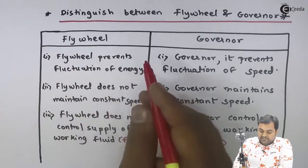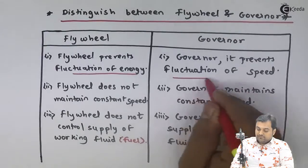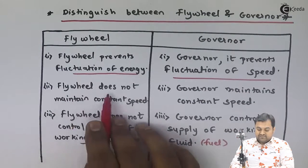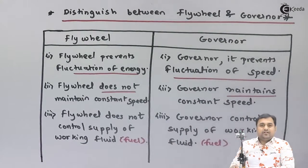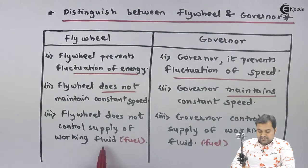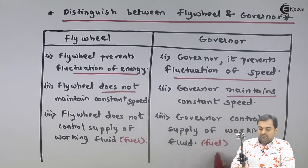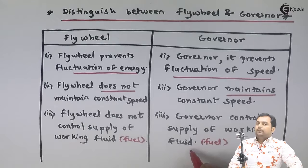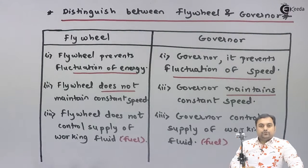The first point is that flywheel prevents fluctuation of energy whereas governor prevents fluctuation of speed. Next, flywheel does not maintain a constant speed whereas governor maintains a constant speed of the engine. Then, flywheel does not control the supply of working fluid — it doesn't have any control over the amount of working fluid supplied to the engine — whereas governor can control the supply of working fluid, as we have seen in the various types of governors, how they control the working fluid depending on the conditions of speed and engine load.